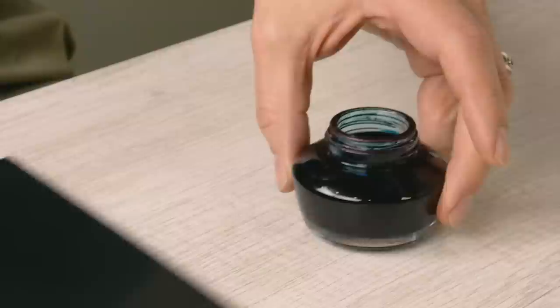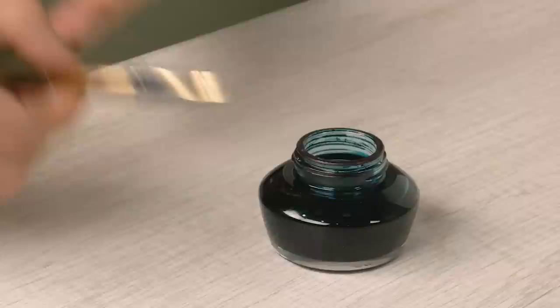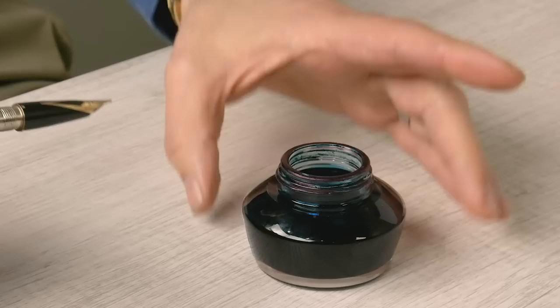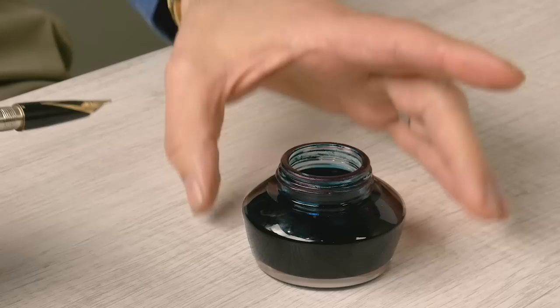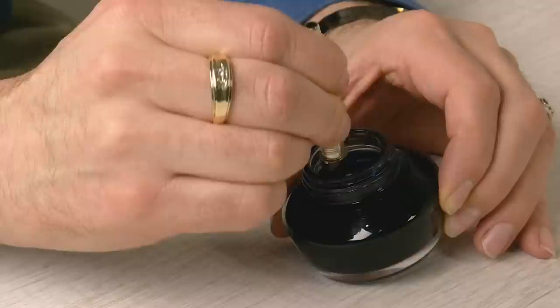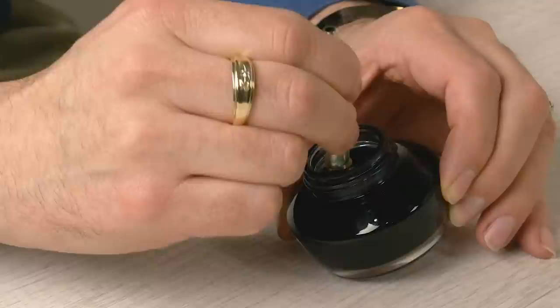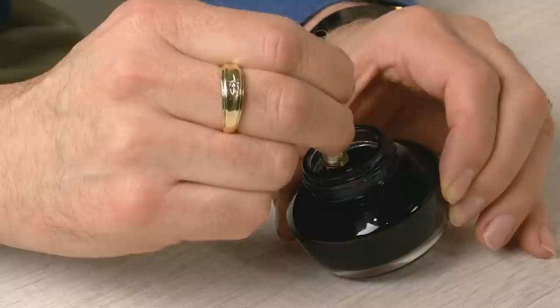So let's ink this up and write with it, and then we'll compare with some of the other models that they made at the time. Okay, so here I have a bottle of Kobe number 44. Basically I'm just going to put this in and give a little squeeze here, and you'll see bubbles come out. Usually you can do this about three or four times and wait a little bit and it'll fill just fine.